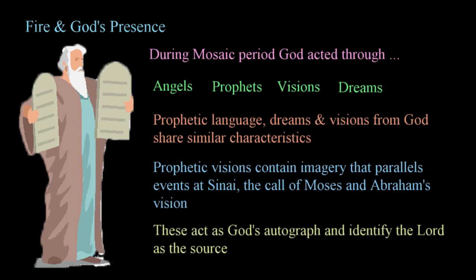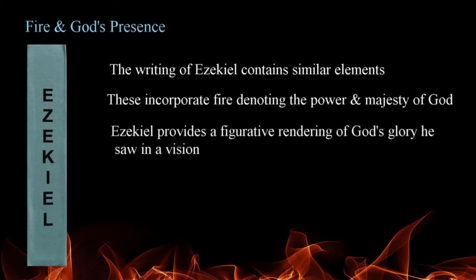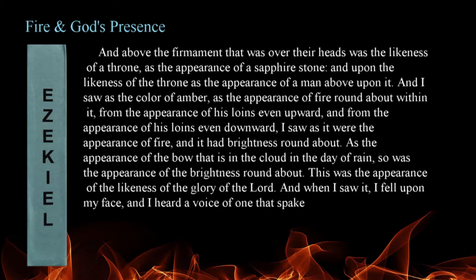Examples of this can be found throughout the writings of the prophets. Ezekiel's writings contain similar elements that describe God and incorporate images of fire denoting the power and majesty of the Lord. Describing the figurative appearance of God, Ezekiel gives a rendering of the power and glory of the Lord as he records his vision of God on his throne. 'And above the firmament that was over their heads was the likeness of a throne, as the appearance of a sapphire stone, and upon the likeness of the throne, as the appearance of a man above upon it. And I saw as the color of amber, as the appearance of fire round about within it. From the appearance of his loins even upward, and from the appearance of his loins even downward, I saw as it were the appearance of fire, and it had brightness round about.' Ezekiel 1:26-28.